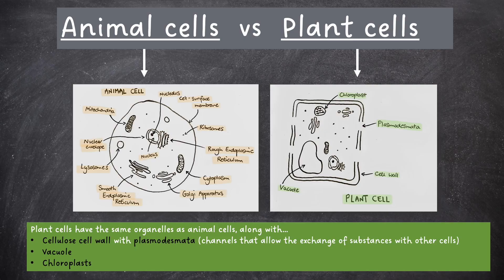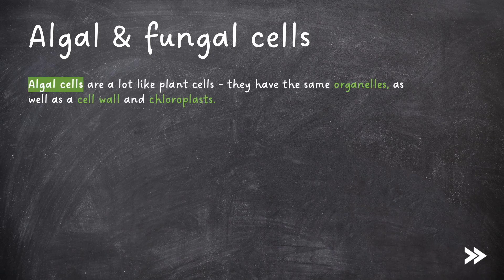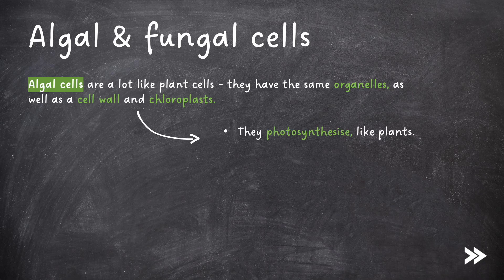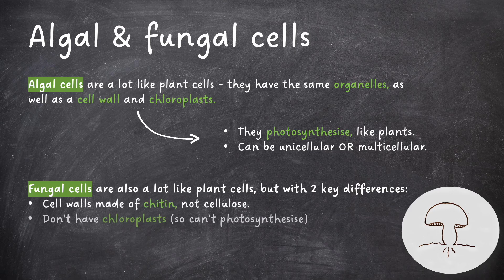Let's briefly cover algal and fungal cells. Algal cells are a lot like plant cells — they have the same organelles, as well as a cell wall and chloroplasts. Because they have chloroplasts, they can also photosynthesize. Algae can be unicellular or multicellular. Fungal cells are also a lot like plant cells, but with two key differences: they have cell walls made of chitin, and they don't have chloroplasts, so cannot photosynthesize.